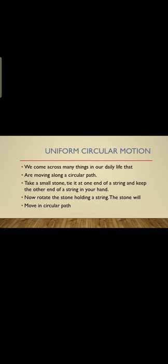We come across many things in our daily life that are moving in a circular path. For example, a person moving around a round track is an example of circular motion. Take a small stone, tie it at one end of a string and keep the other end in your hand. Now rotate the stone holding the string — the stone will move in a circular path, which is uniform circular motion.